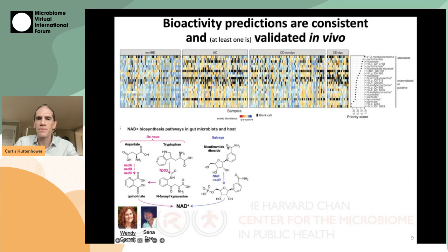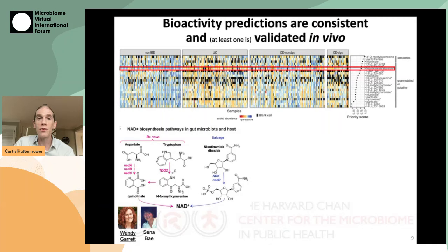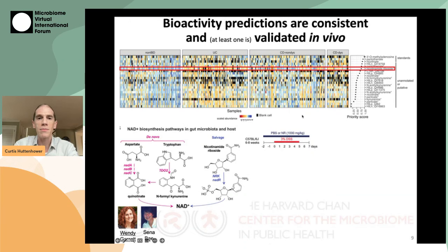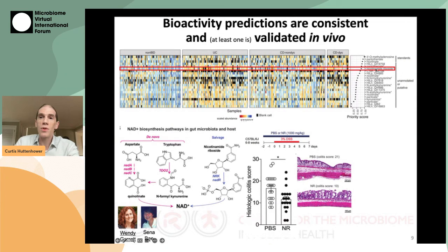We were able to validate this for one compound for which we had a new guess as to its identity: nicotinamide riboside. This was the most prioritized in the module as depleted in ulcerative colitis and thus potentially anti-inflammatory — and this proved to be the case. Senna Bay, a shared postdoc with Wendy Garrett's lab, did a series of nice mouse experiments, some of which built on a DSS model of colon injury, either chronically or acutely, many endpoints of which supported that nicotinamide riboside acts as an anti-inflammatory compound in the gut.